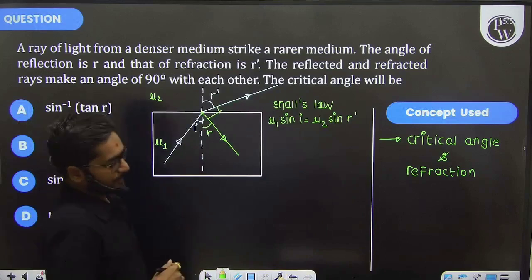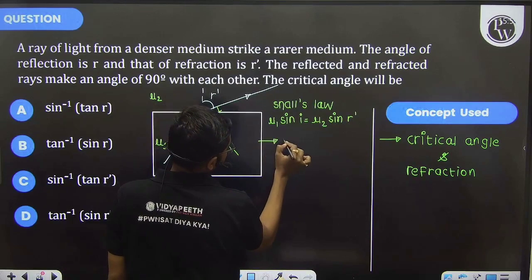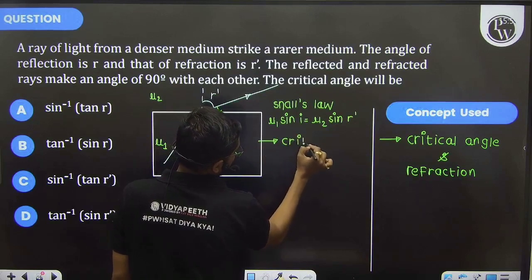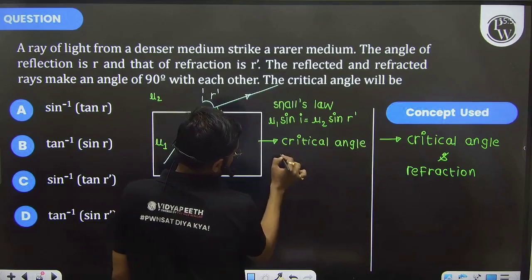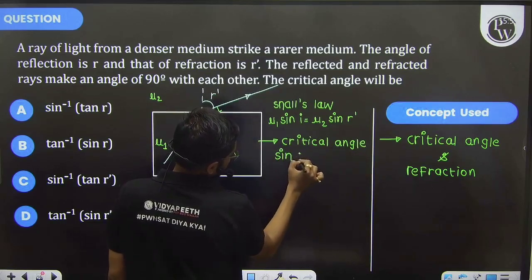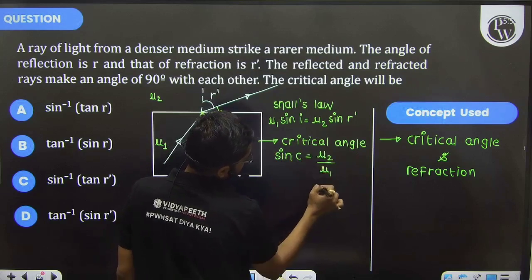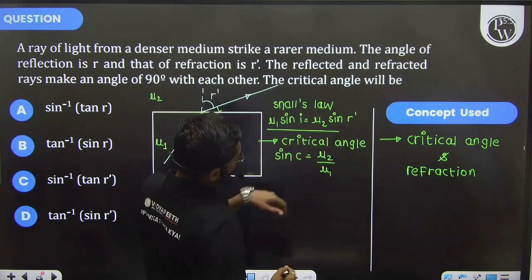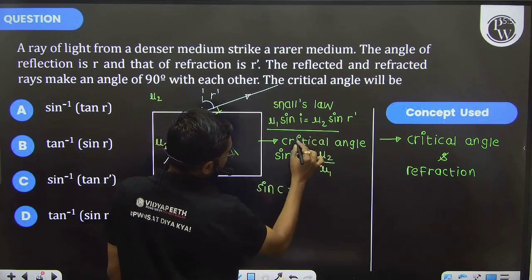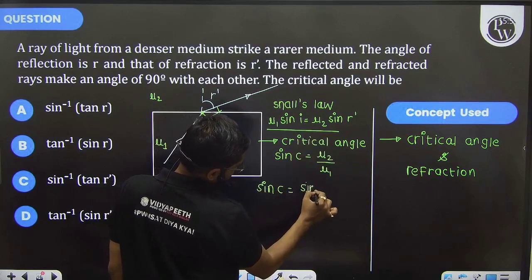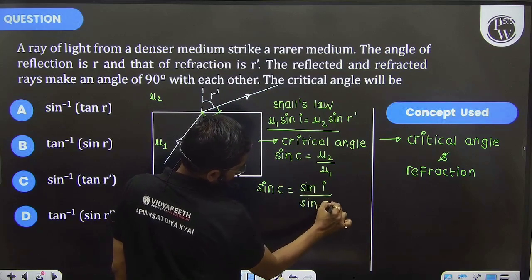For critical angle, sin c equals μ rarer upon μ denser. From this formula, if I take μ2 by μ1, then sin c equals μ2 by μ1, which equals sin i over sin r'.